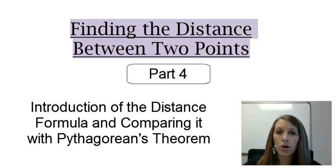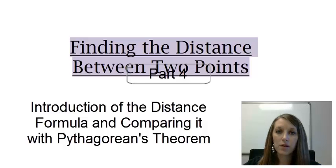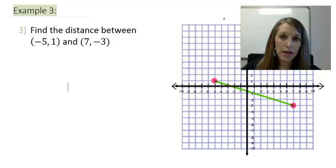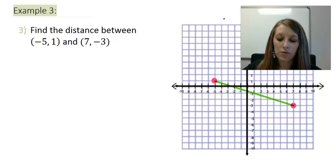In this video, we're going to be doing some more complicated examples, but I want to prove to you that Pythagorean's Theorem will always work, and then I'll finally actually give you that distance formula that I promised. So let's look at a third example here, where I'm trying to find the distance between negative 5, 1, and 7, negative 3, which I have drawn here on the right.